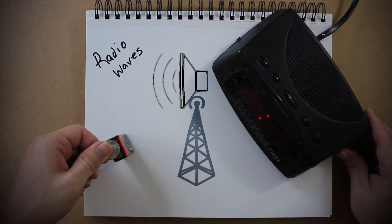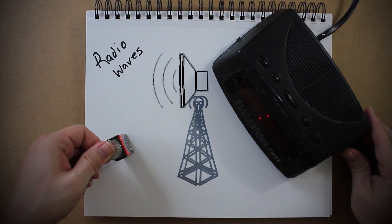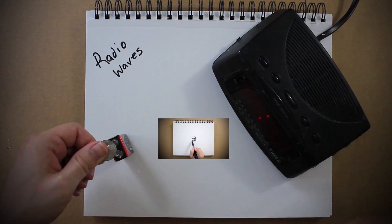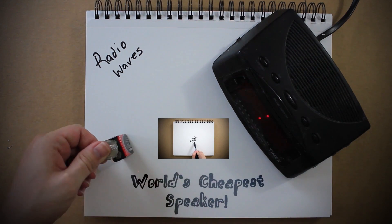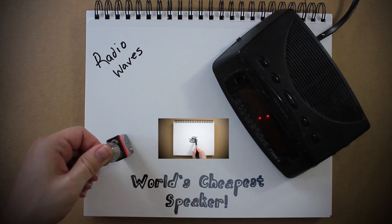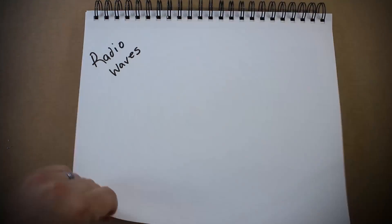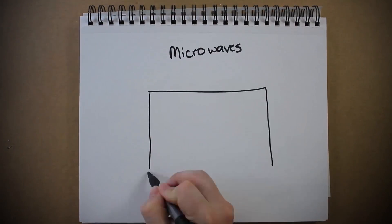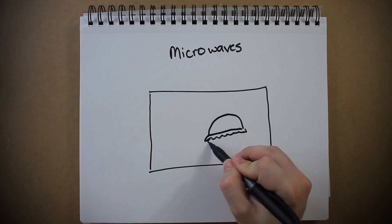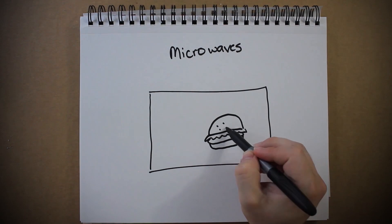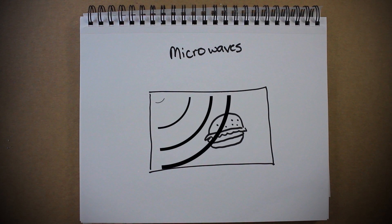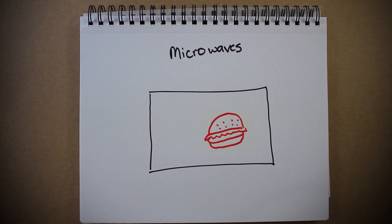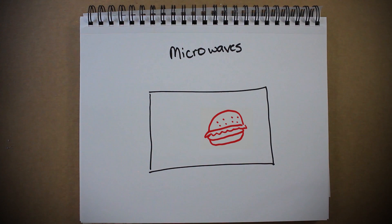And if you're curious about how it's converted to sound, you can watch this video to see how electromagnetic speakers work. In the case of microwaves, the wavelengths cause the molecules in water and fat to vibrate in such a way that they start to heat up, which is why it's good for cooking.